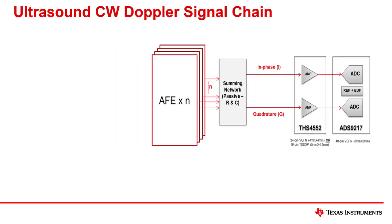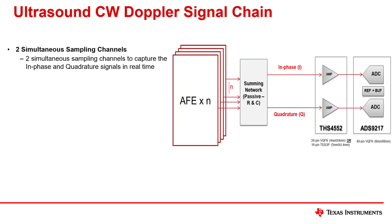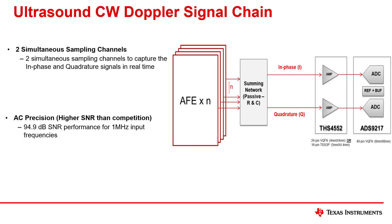In ultrasound systems, the ADS9219 can be used to measure the in-phase and quadrature signals, or the I and Q paths. A dual-channel simultaneous sampling ADC is optimal for measuring the IQ path in real time while reducing the solution cost. 94.9 dB SNR at 1 MHz ensures strong AC precision, which is needed to ensure accurate measurements of such sensitive and small signals.